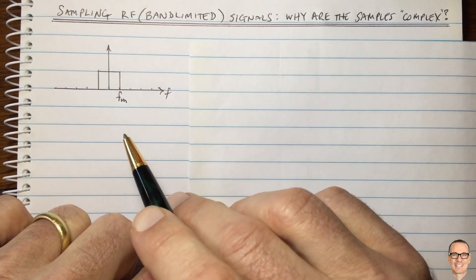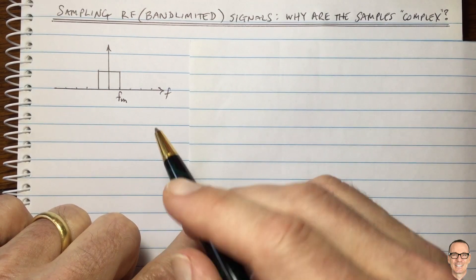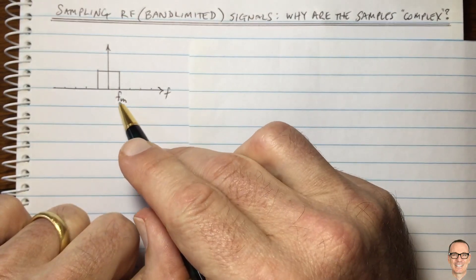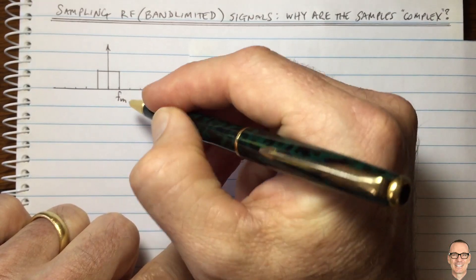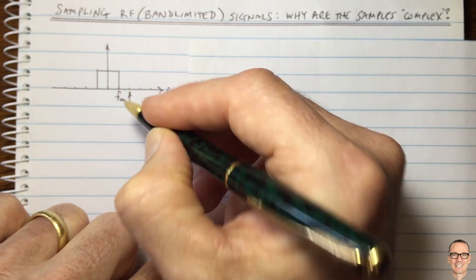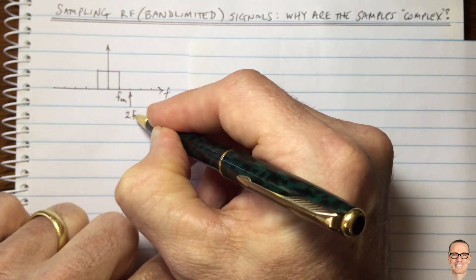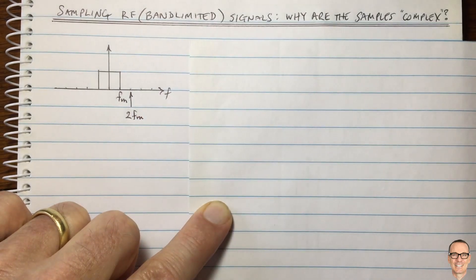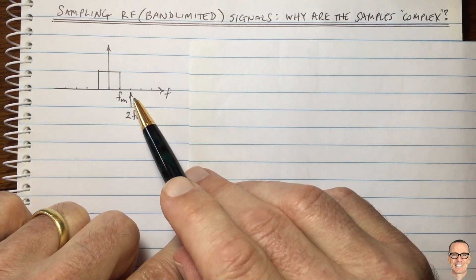And we know that if we want to sample this and be able to fully reconstruct it after having sampled it, then Nyquist rate tells us we need to sample at least twice the highest frequency component. So that's this frequency here, and this is 2 times FM. That's the Nyquist frequency rate, and they would be real valued samples.